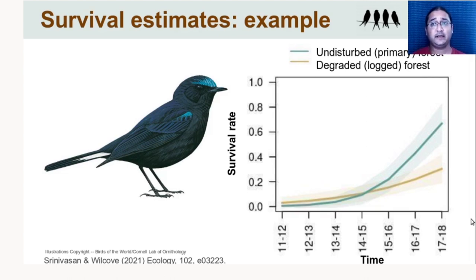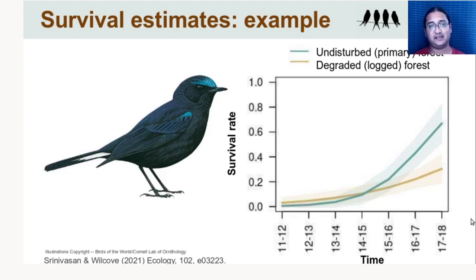Based on the capture histories, this is our work from Arunachal Pradesh: we estimate that the survival rates of the white-tailed robin have increased from almost zero to about 80% in primary forest — the green line — and survival rates in logged or degraded forest have also increased but at a much slower pace than in primary forest. We get very valuable information about how populations of these species are doing in the habitat based on capture-mark-recapture.